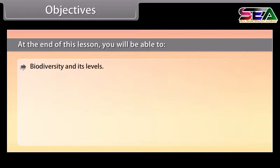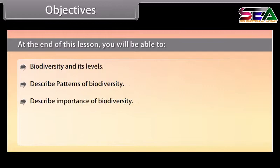Objectives. At the end of this lesson, you will be able to: understand biodiversity and its levels; describe patterns of biodiversity; describe the importance of biodiversity; explain the loss of biodiversity; and describe biodiversity conservation.